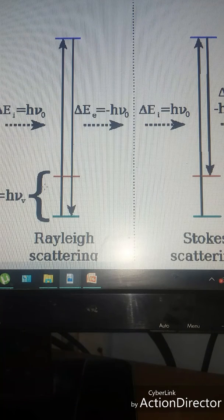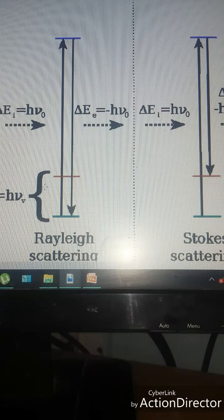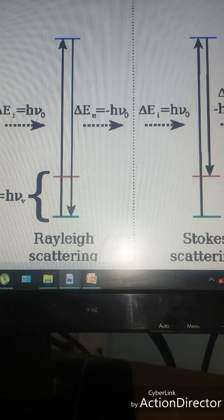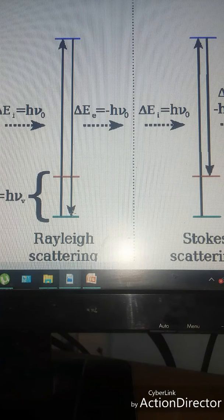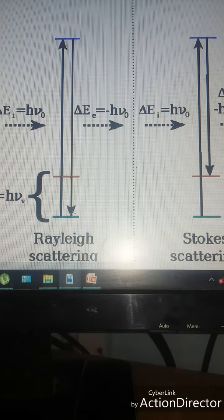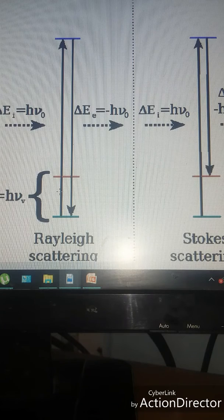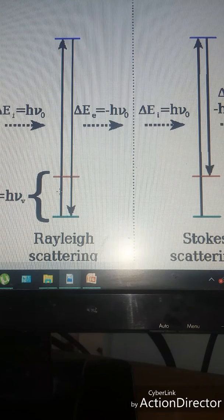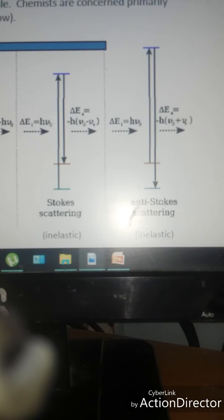In Rayleigh scattering, the electrons are excited and then they decay back to the same level from where it started. So this is Rayleigh scattering and it is often known as elastic scattering. In Rayleigh scattering, the scattered photons have the same energy as the incident light. That is why it is known as elastic scattering.